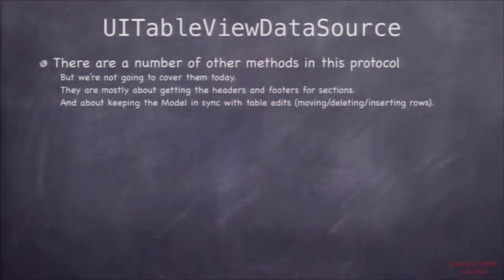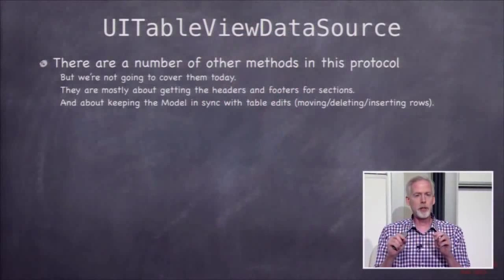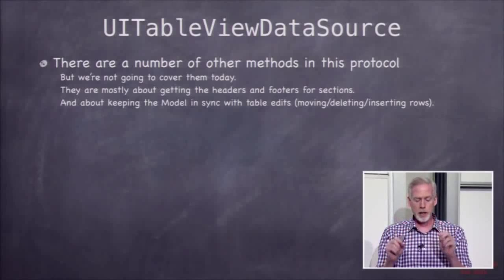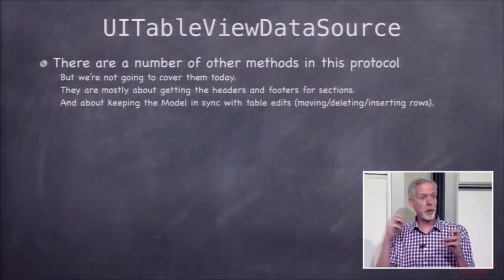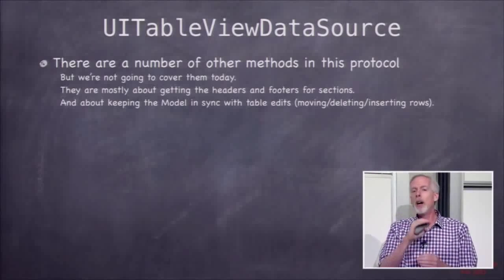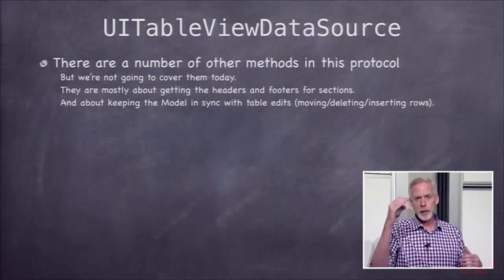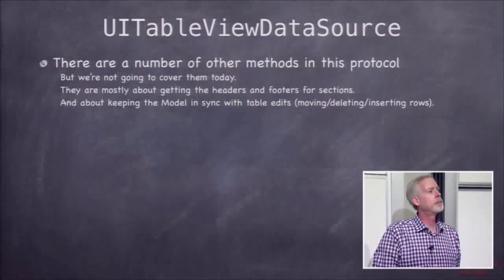There are other methods in the data source protocol mostly about getting titles for headers and footers. You will need the one that returns the string for a section header, because in your homework you'll have the name of the country as a section header. These tables can also be edited — rows can be removed, moved around — and there are data source methods that let you know when rows are moving or being deleted so you can keep your model in sync.